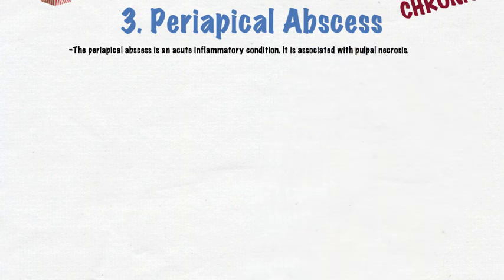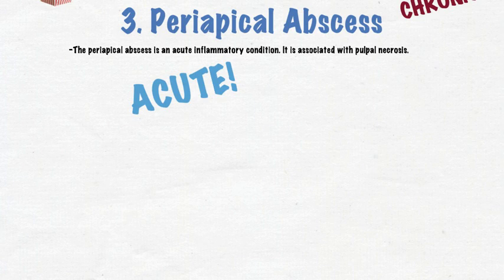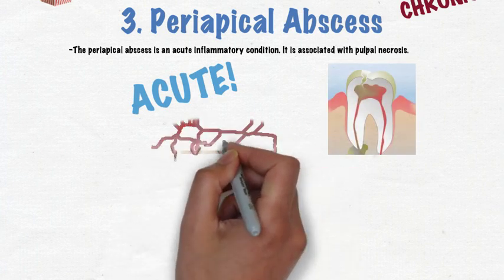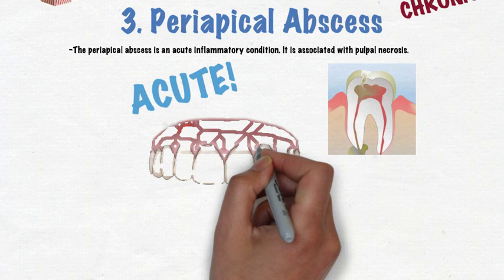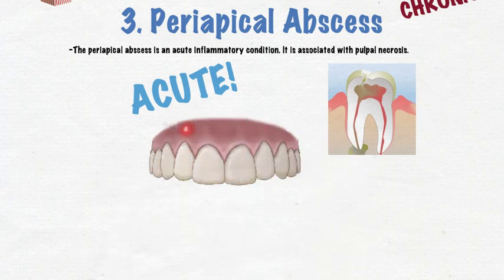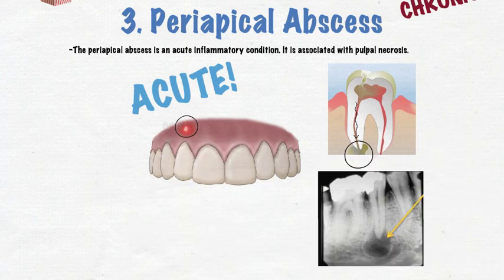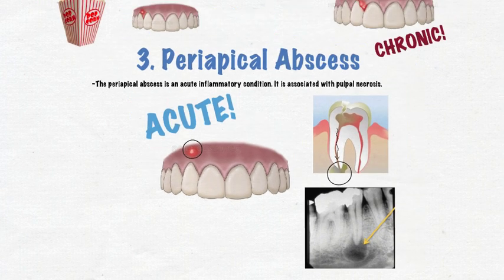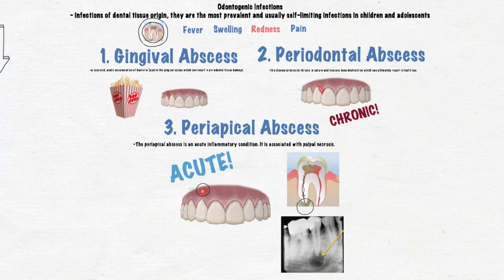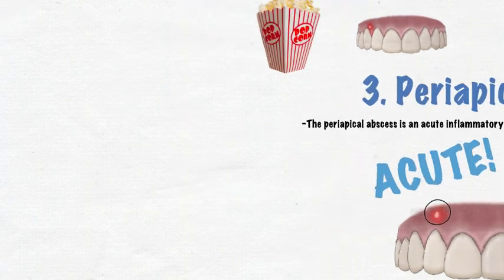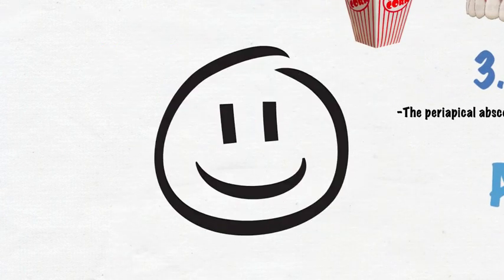The periapical abscess is an acute inflammatory condition associated with pulpal necrosis — in other words, a dead tooth. When the internal dentinal tissue dies, it results in bacterial invasion. These bacteria then make their way down the path of least resistance and exit the tooth at the apex, where an opening exists to the rest of the body. When the bacteria exit, it results in a dark shadow or radiolucency detectable with x-ray technology. These infections have the propensity to spread and cause systemic infections, but with early detection and diagnosis, appropriate treatment can prevent this.